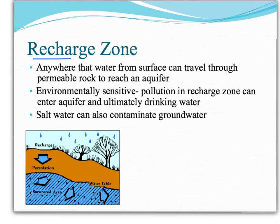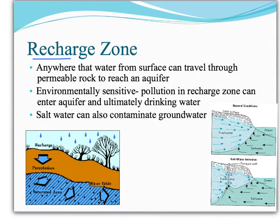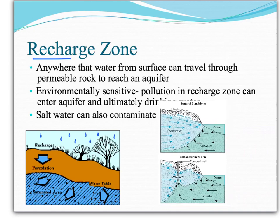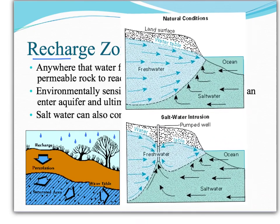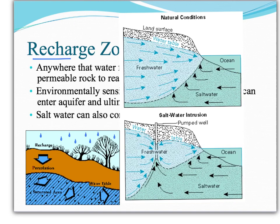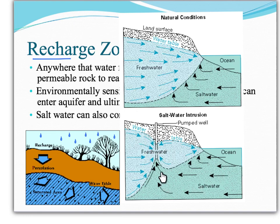Salt water can also contaminate our groundwater. Salt water intrusion — when salt water contaminates our groundwater — is actually a problem if we live near a coastline. Under normal conditions, we have fresh water and salt water, and there's a natural barrier interface that occurs between the two. However, when you stick a well near the coastline and pump out all this fresh water, you run the risk of pulling salt water into the well or into the fresh water resource. That is called salt water intrusion.